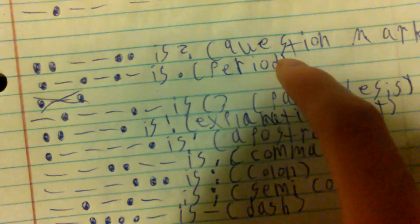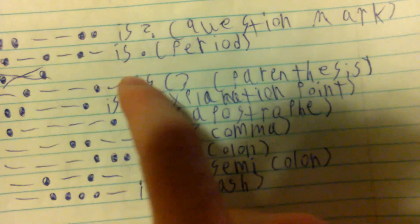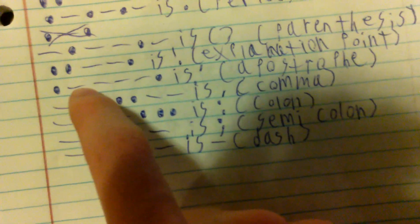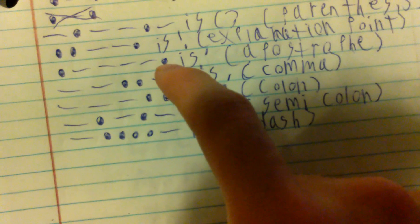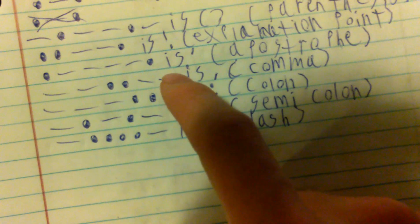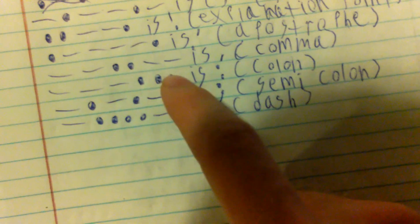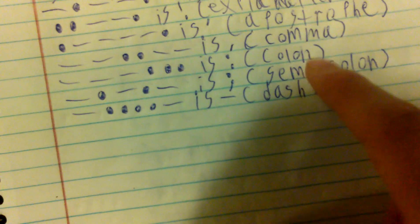Dot dash dot dash dot dash is a period. Dash dot dash dash dot dash is parentheses. Dot dash dash dash dash dot is an apostrophe. Dash dash dot dot dash dash is a comma. Dash dash dash dot dot dot is a colon. Dash dot dash dot dash is a semicolon. Dash dot dot dot dash is a dash.